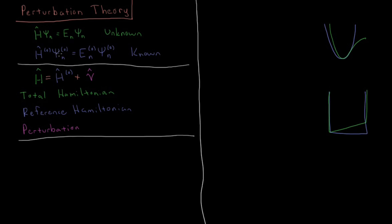So in perturbation theory we have a total Hamiltonian, H in green here. And that is written as a sum of a reference Hamiltonian, H0, for which we can solve the Schrodinger equation exactly, and a perturbation term.